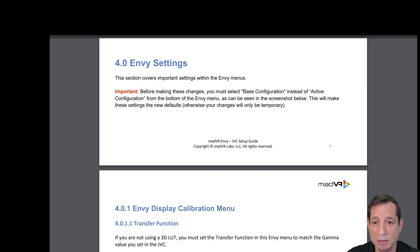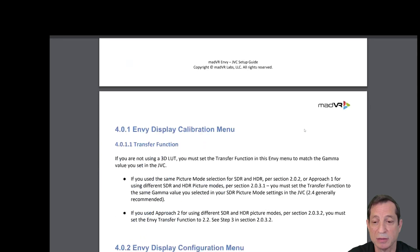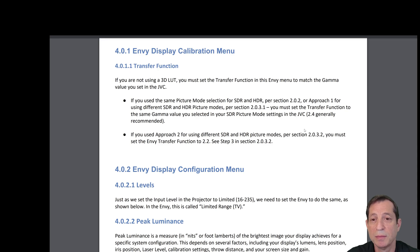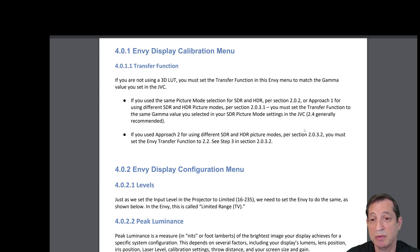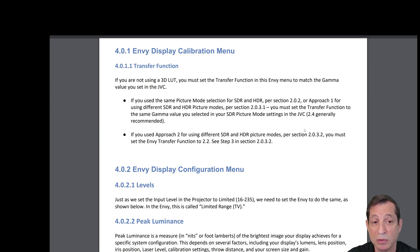Now let's discuss a few settings that need to be made in the Envy. Before we continue, just remember you need to make all your changes and then save them to the base configuration so they're not temporary and revert, as we've covered in previous lessons. From the Envy display calibration menu, you'll find a transfer function. If you're not using a 3D LUT, you must set the transfer function in this Envy menu to match the gamma values set in your JVC. If you use the same picture mode selection for SDR and HDR as we covered earlier, or you used Approach 1 for using different SDR and HDR picture modes, you must set the transfer function to the same gamma value you selected in your SDR picture mode settings in the JVC.